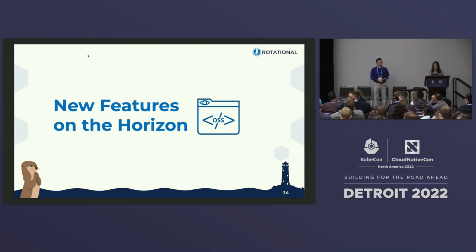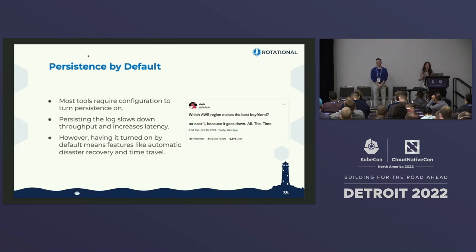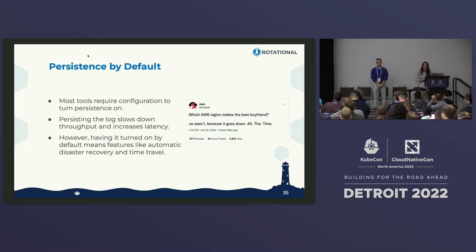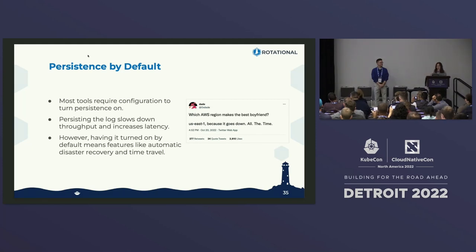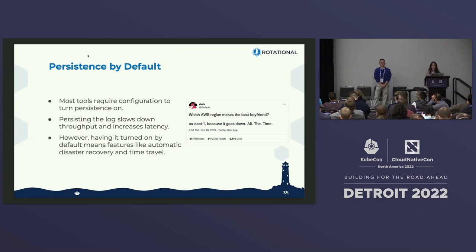Let's bring it back to open source — we're at a big open source conference. We think four things are coming next. First: persistence turned on by default. Having persistence on by default means we can do things like time travel and recover from disaster more easily. Most eventing solutions currently have persistence off by default, intentionally, to improve throughput and reduce latency. But that takes away key features needed if we're moving toward events as the atom of distributed systems.